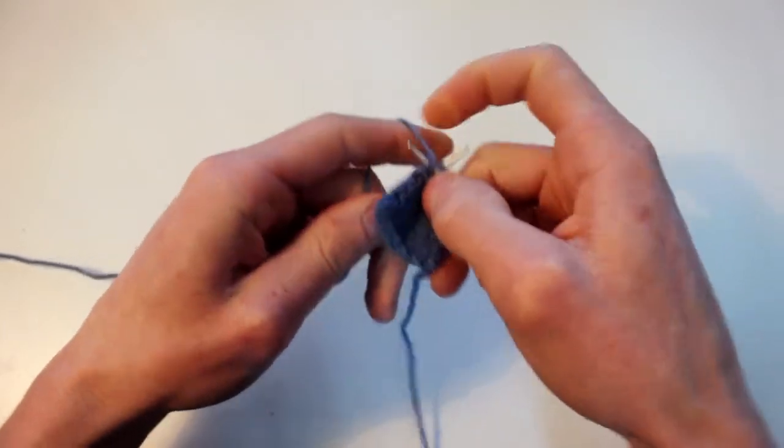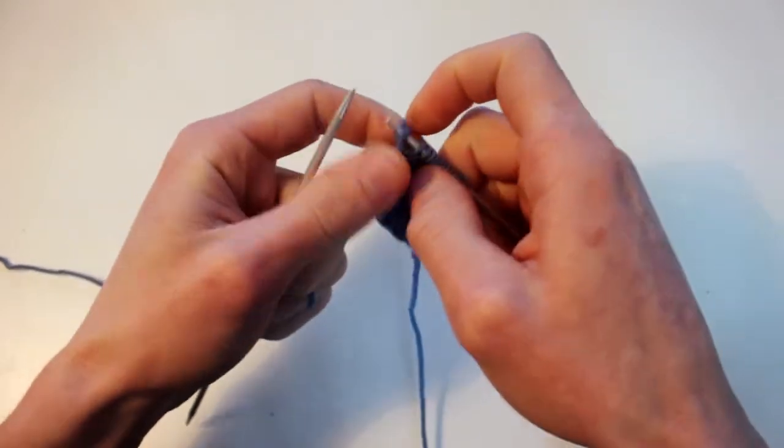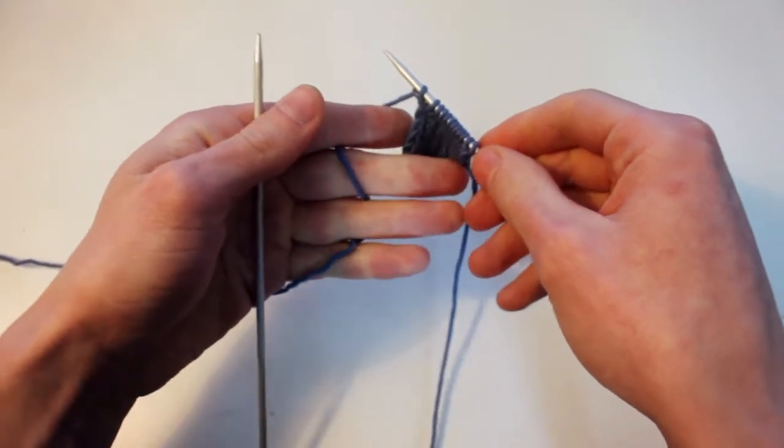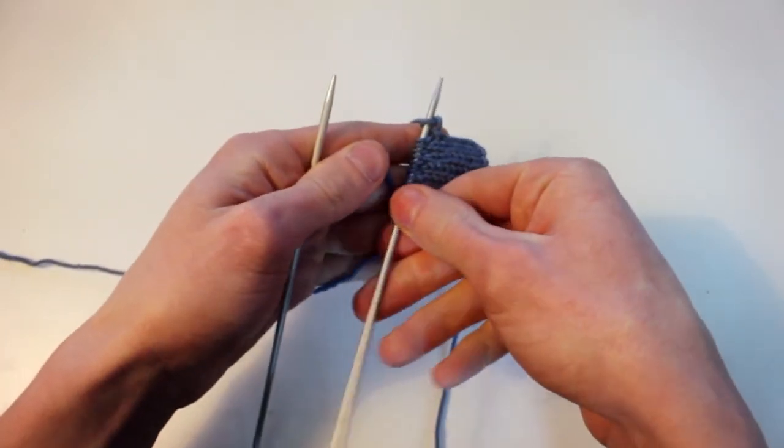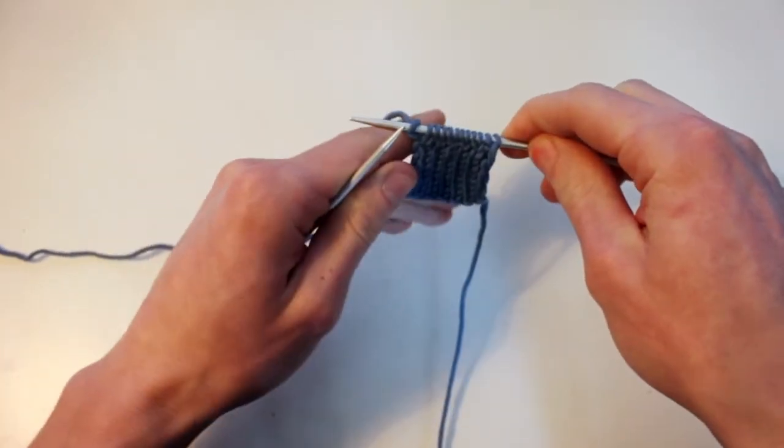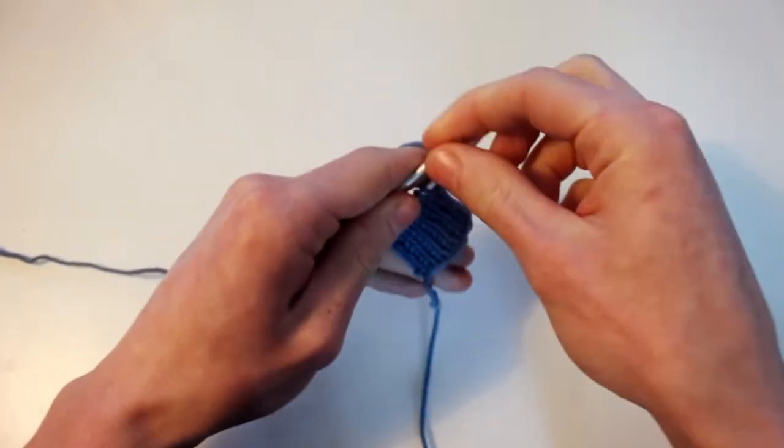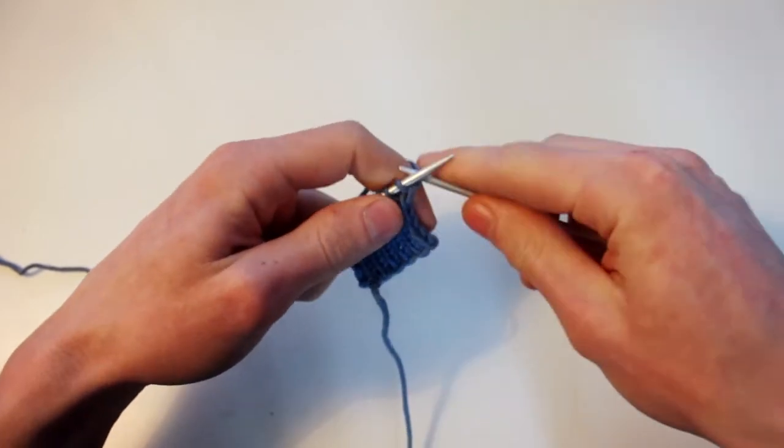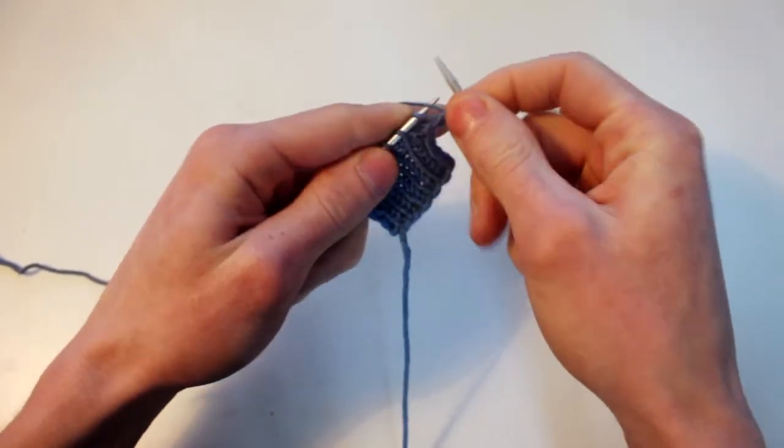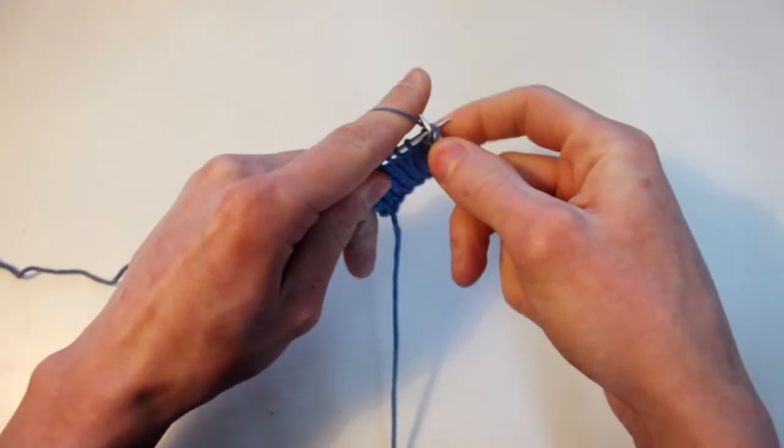And another benefit of feeding the yarn through your left hand is that when you're done you just take your right handed needle and place it into the position that the left hand needle was. They just switch places just like that. You don't need to drop the yarn or anything. You just switch places and then continue working.